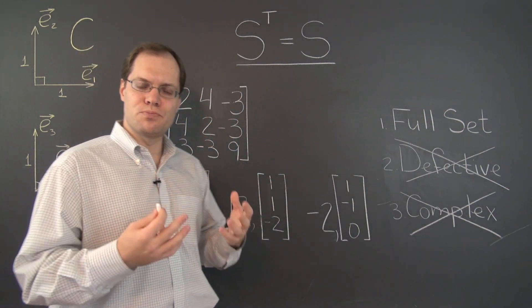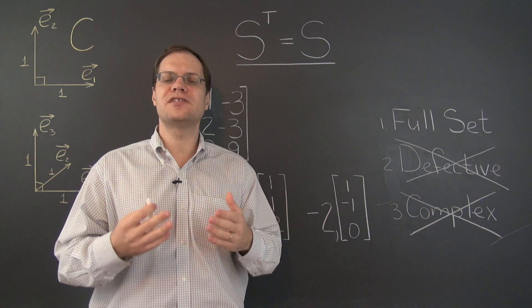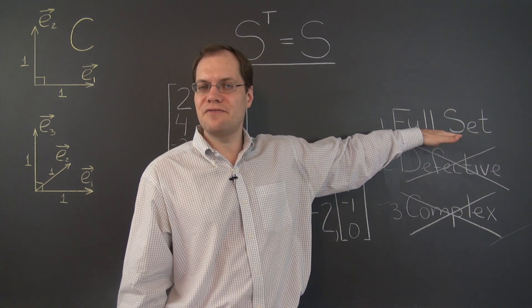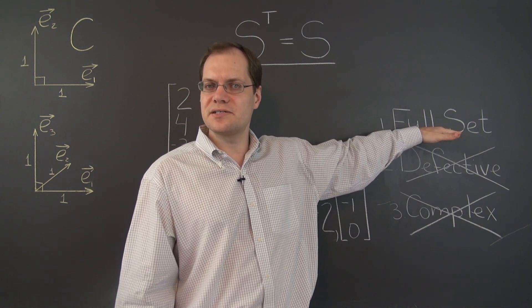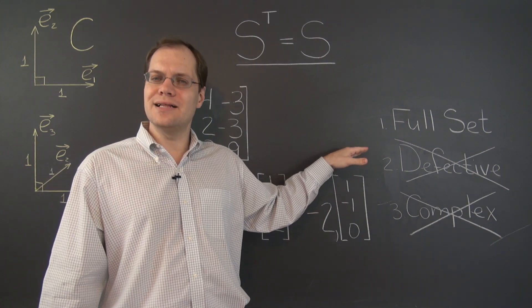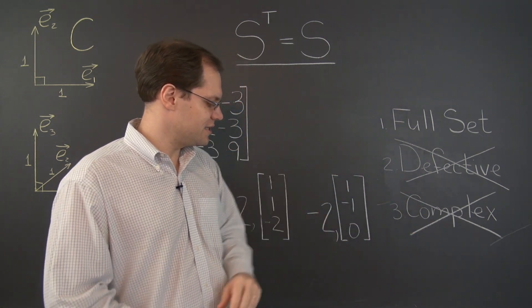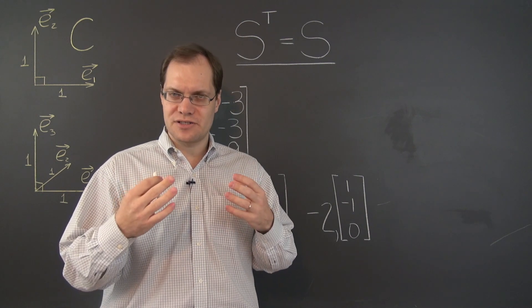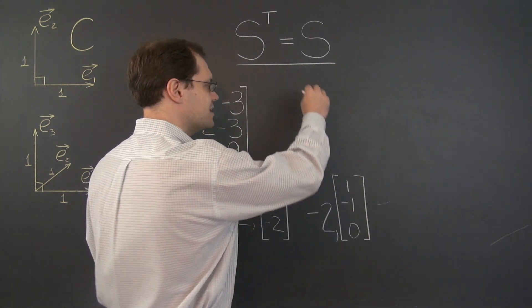So now we're going to prove the part of the statement where we said that eigenvectors corresponding to distinct eigenvalues are orthogonal. Proving that symmetric matrices have a full set of eigenvalues and eigenvectors is actually a little bit advanced for this stage — we will definitely discuss it later in the course. For now, we'll focus on the orthogonality, and it will be a very short and elegant argument. So suppose that x and y are two eigenvectors of the matrix S that correspond to two distinct eigenvalues lambda 1 and lambda 2.